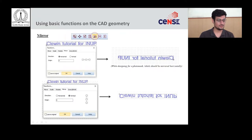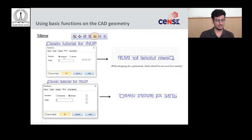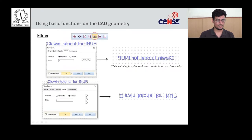Another option is mirror. Select the mirror option and you have two choices. For example, if I have a label 'Klevin tutorial for INVP' and I want to mirror it along the x-axis, I take the reference of the y-axis — mirroring horizontally — then click OK. The result will look like a flipped version of the original.